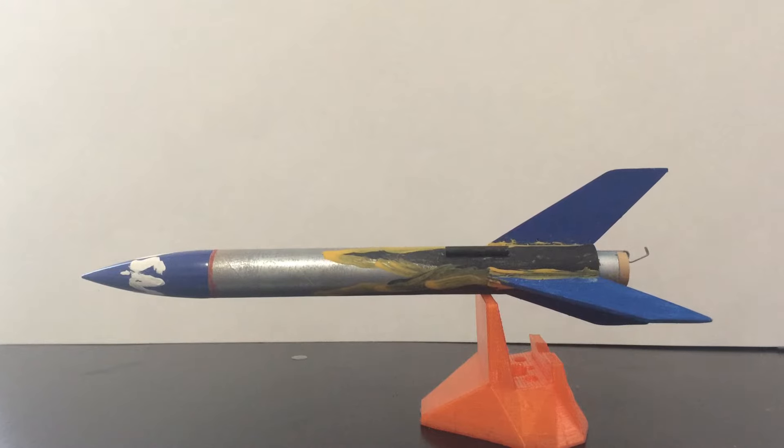Find the center of mass of your rocket by balancing it on your finger or a thin object such as this one. Your rocket should be able to lie level on a single point.